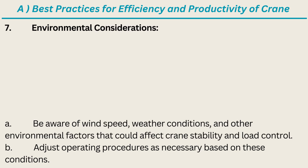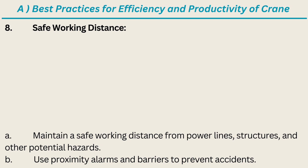Seventh: Environmental Considerations — be aware of wind speed, weather conditions, and other environmental factors that could affect crane stability and load control. Adjust operating procedures as necessary based on these conditions. Eighth: Safe Working Distance — maintain a safe working distance from power lines, structures, and other potential hazards. Use proximity alarms and barriers to prevent accidents.